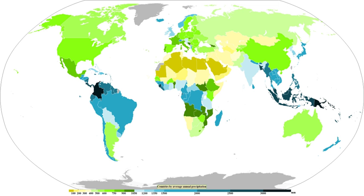Convective rain, or showery precipitation, occurs from convective clouds such as cumulonimbus or cumulus congestus. It falls as showers with rapidly changing intensity. Convective precipitation falls over a certain area for a relatively short time, as convective clouds have limited horizontal extent. Most precipitation in the tropics appears to be convective; however, it has been suggested that stratiform precipitation also occurs. Graupel and hail indicate convection.